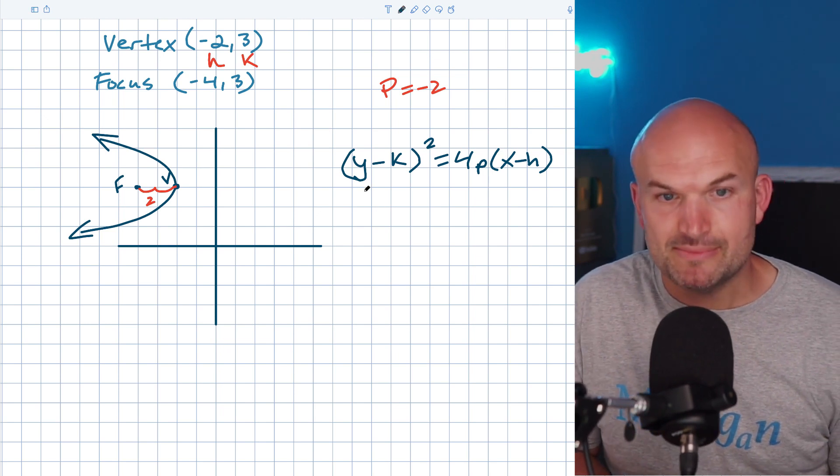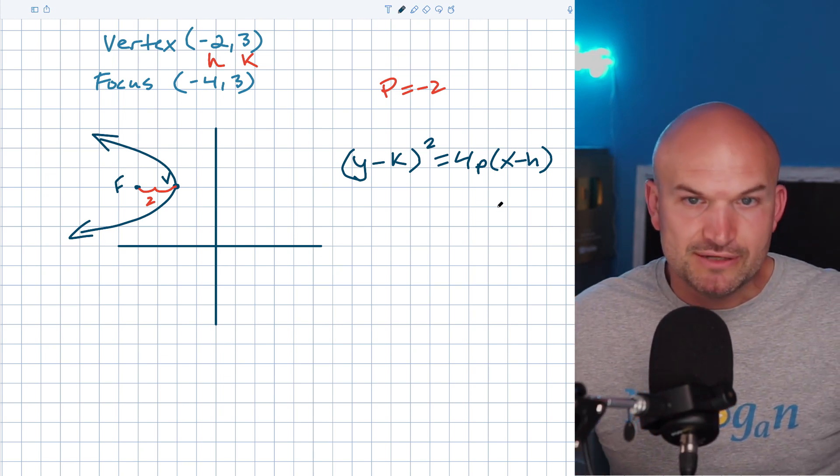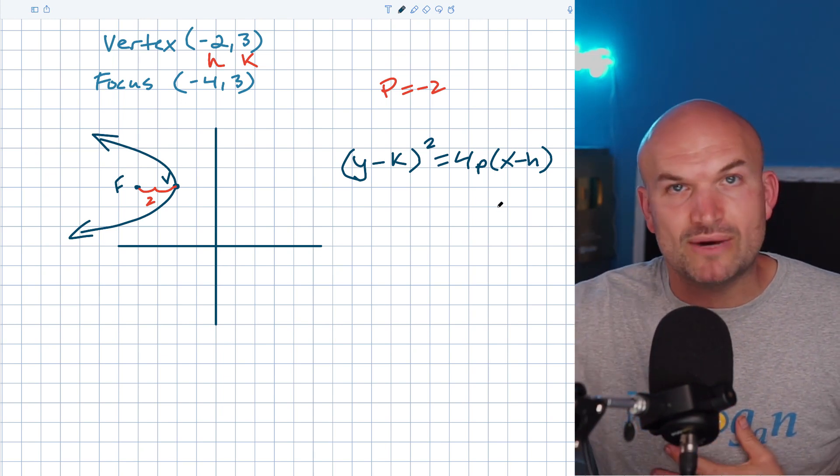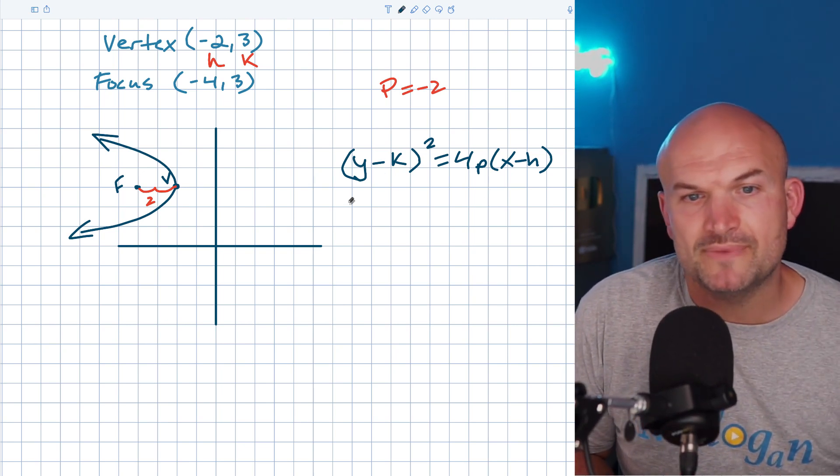So now what I'm simply going to do is just plug in all this information and then we can go ahead and simplify. Because again, we found the orientation, the orientation allowed us to write the equation. And then the only other thing missing that we needed to know was our value of P.